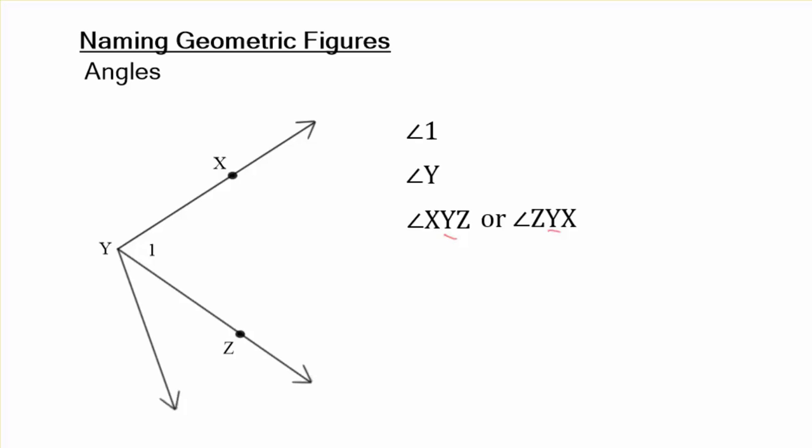Now what if that is the vertex of another angle? We have W, Y, Z there. It could also be Z, Y, W. But that's the only way you're going to be able to name that unless they give you another little number like that number two right there, angle number two.